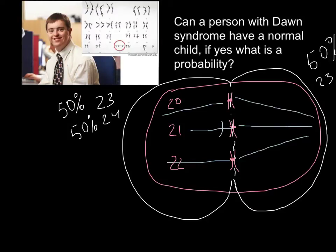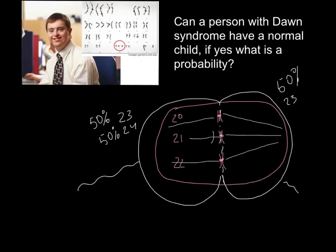So what does it mean? For example, if this is going to be a sperm cell format, we have 50% of the sperm with normal number of chromosomes, 23, and 50% with chromosome number 24.